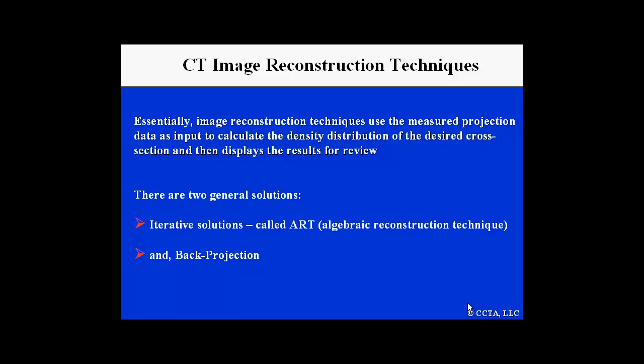Image reconstruction by CT uses the measured projection data as input to calculate the density distribution of the desired cross-section and then displays the results for review. There are two general solutions for reconstruction algorithms: an iterative solution developed many years ago, originally called the ART algorithm or algebraic reconstruction technique, and the one that is more commonly used today, which is called back projection.